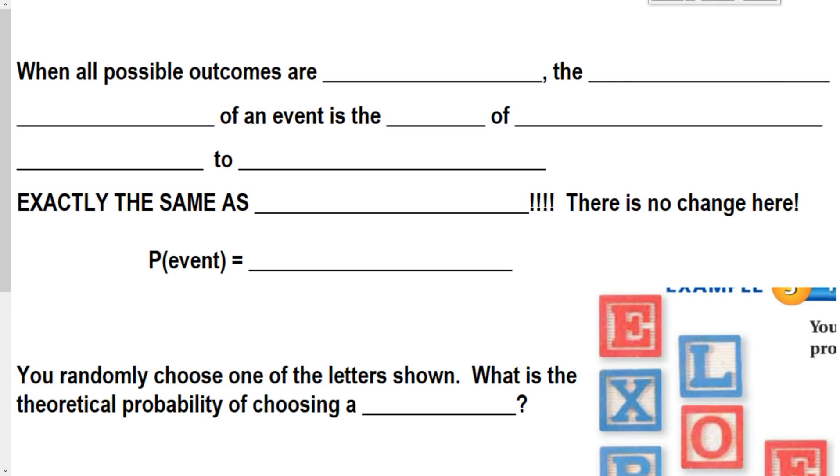All right. So, moving on. Now we're going to start talking about theoretical probability. I just talked a lot about experimental. Now we're going to talk about theoretical. So when all possible outcomes are equally likely, the theoretical probability of an event is the ratio of the...